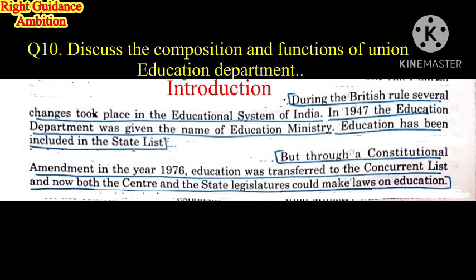In 1947, when India became independent, the education department was given the name of the Education Ministry. This was so that educators could become independent and laws and policies could become specific through an education-based ministry.